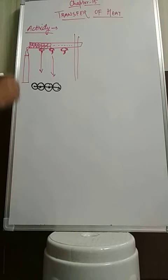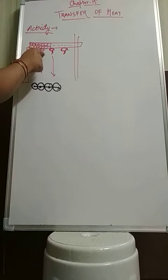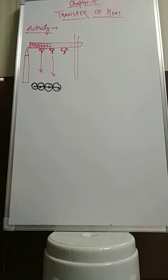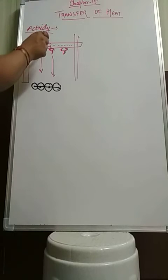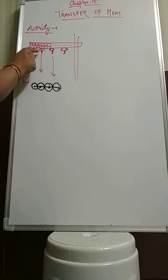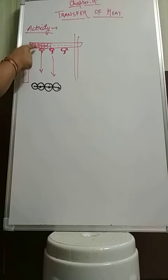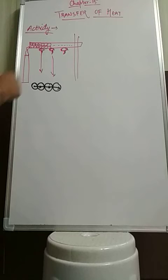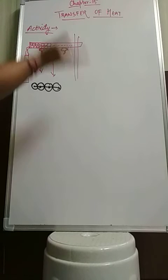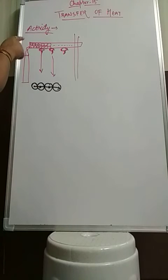The next characteristic is that heat can be transferred from one object to another if they are in contact with each other. Suppose if the thumb pins were not in contact with this metal rod, the heat energy would not transfer to them. But as they are in contact with each other, the heat energy is transferring.